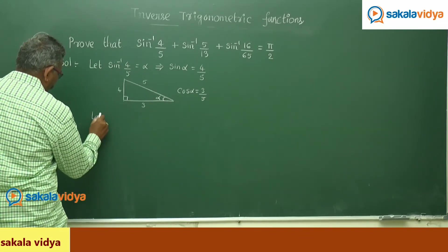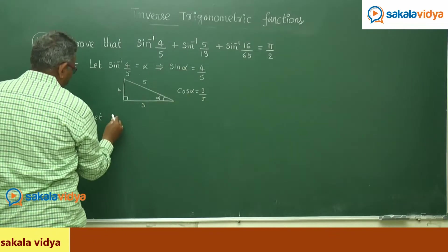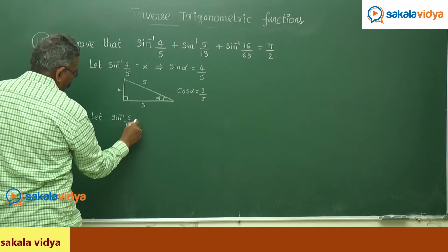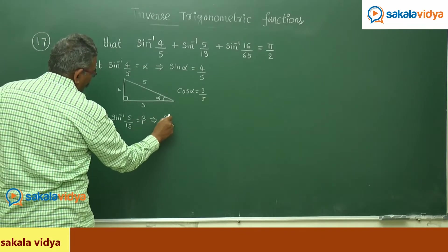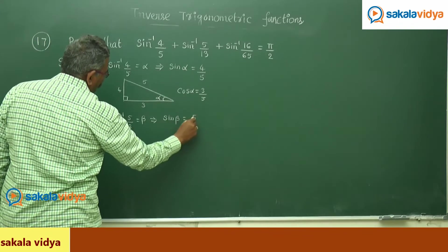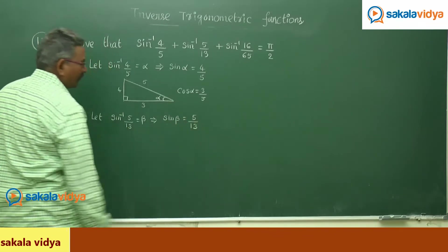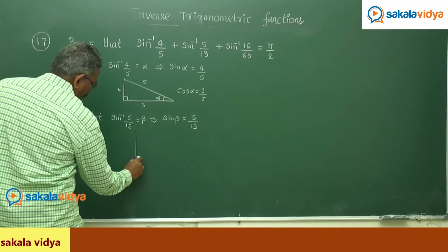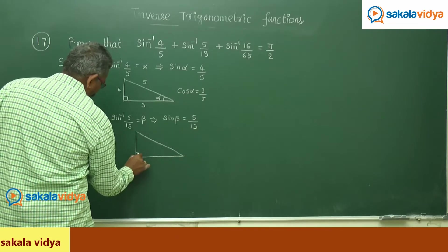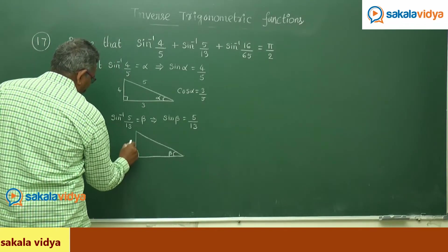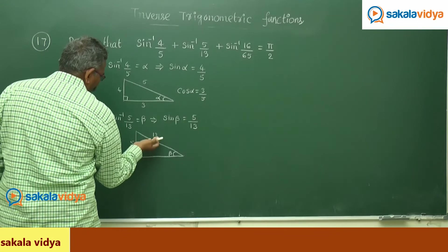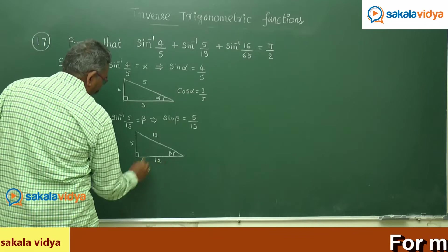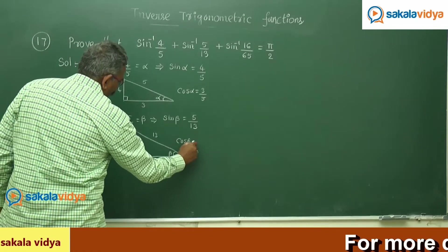Now let sin inverse 5/13 equal to beta. Then sin beta equals 5/13. Consider one more right angle triangle. Here the sides are 5 and 13; since 169 minus 25 is 144, the remaining side is 12. So cos beta equals 12/13.